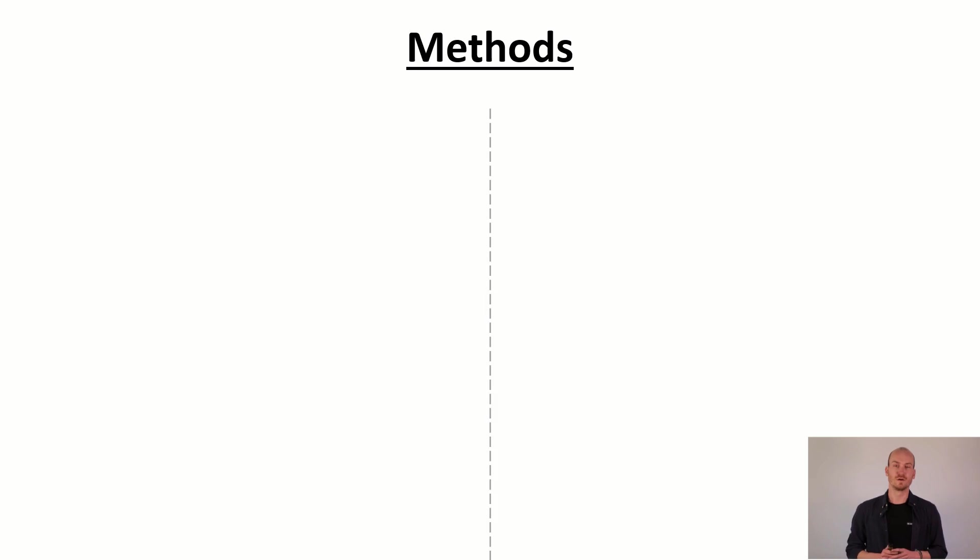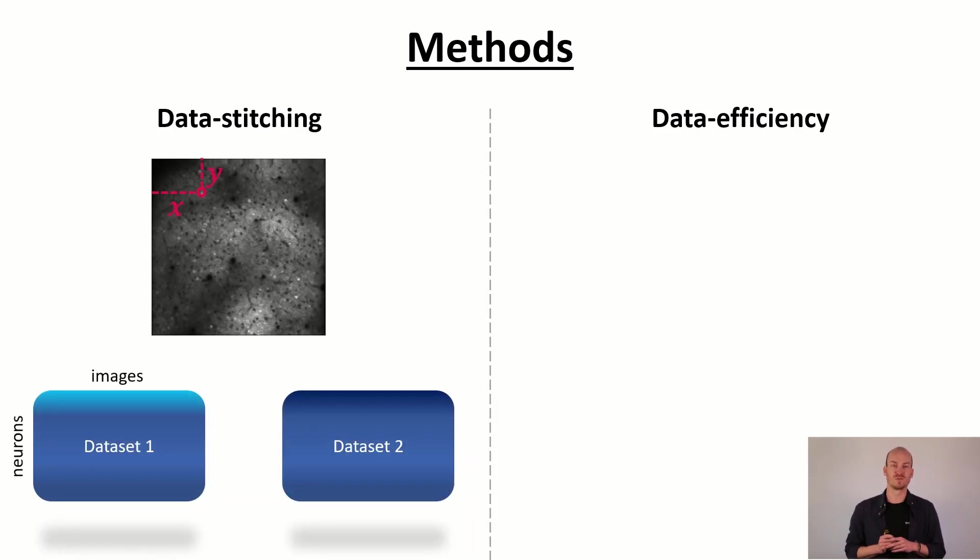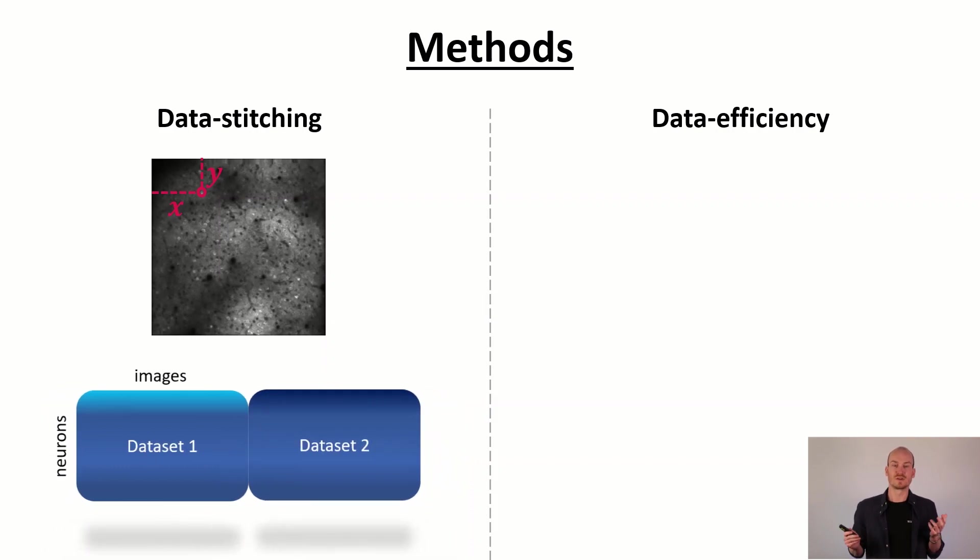The methods that we could think of are twofold. We can improve and enlarge our datasets by stitching datasets together and we can make even better use of the data that we already have by being more efficient. In order to stitch datasets together we look at the positions of the neurons in the cortex. Once we have these positions we can track the neurons over different sessions and scans and can then later concatenate the datasets together such that we effectively gain combined datasets which are bigger.